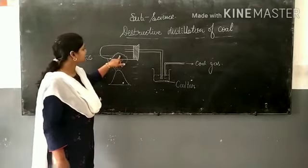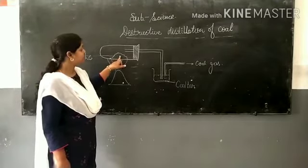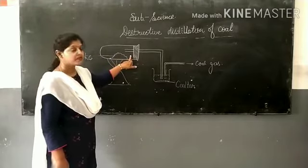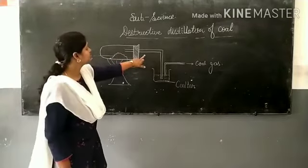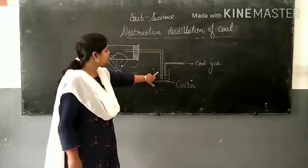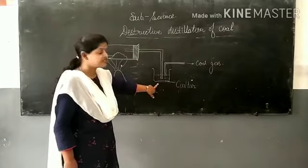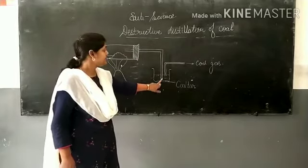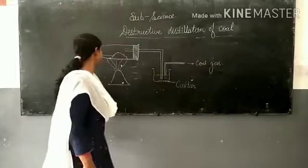Here we are taking coal in an inverted glass tube which is covered with a cork and a tube. This tube is inserted in a beaker which contains water, and another tube moves out.